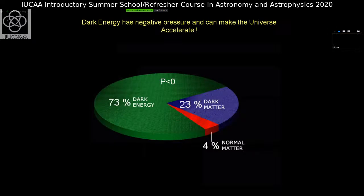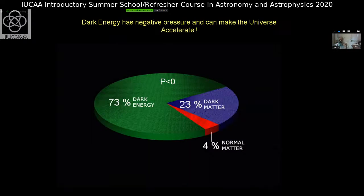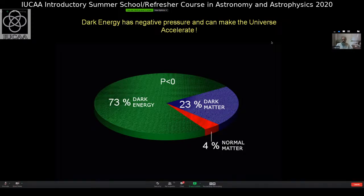The universe is really mysterious because it's got a lot of dark stuff out there. By dark stuff, I mean stuff that doesn't shine — the stars shine, the galaxies shine, some planets shine with reflected light. But 96% of the universe does not shine at all. We believe this dark component is not one component, but perhaps two: one called dark matter and the other called dark energy.